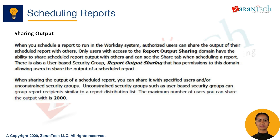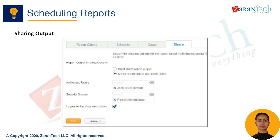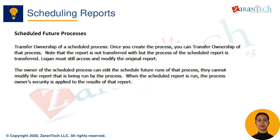When the schedule runs, you can also publish the output to a shared location that users can access. Click Add to select the shared location. Here you can see any scheduled processes and their status. You can also edit or delete schedules from here.